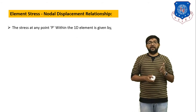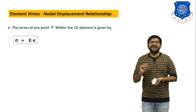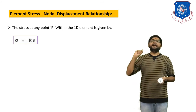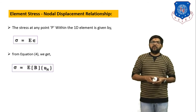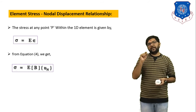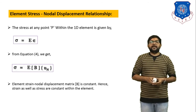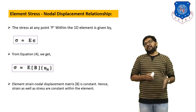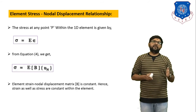For the stress–nodal displacement relationship, by Hooke's law the stress within the one-dimensional element is sigma equals E times epsilon, where sigma is element stress, E is the modulus of elasticity, and epsilon is the element strain. Substituting the strain expression gives sigma equals E times B times u. The matrix B is constant, so both strain and stress are constant within the element. This completes the stress–strain–displacement relationship.